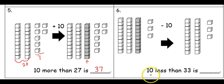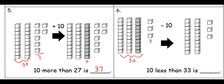Going across, I'm asked for ten less than thirty-three. I've started off with my thirty and three to show thirty-three. I'm going to take away one of the groups of ten. That would give me two groups of ten and three ones. So ten less than thirty-three is twenty-three, shown by the two groups of ten and the three ones.